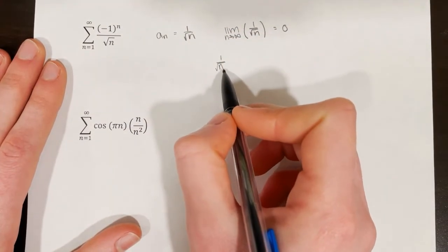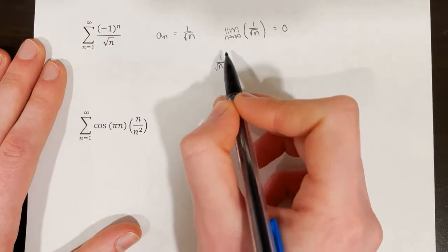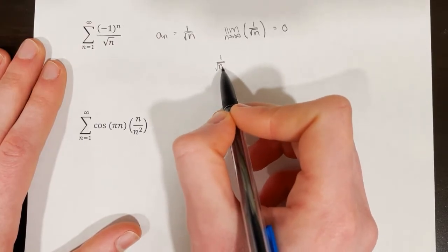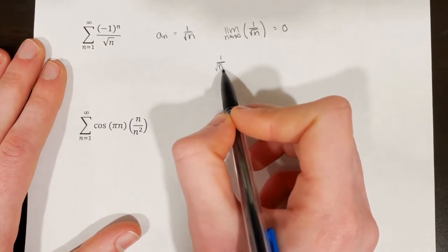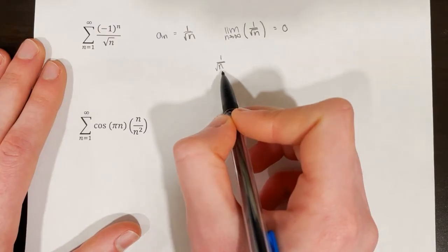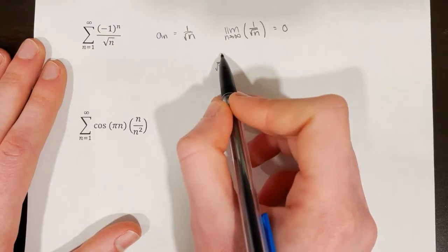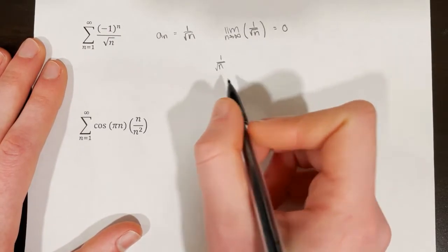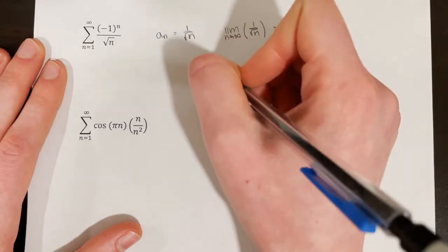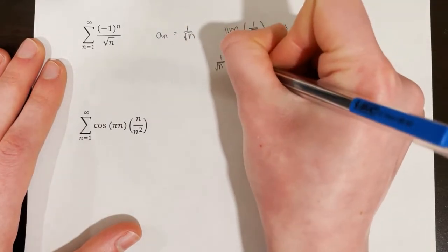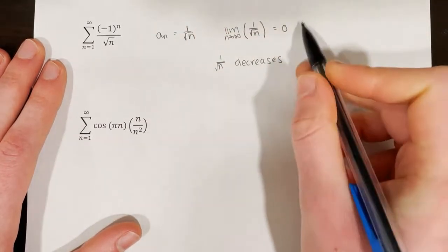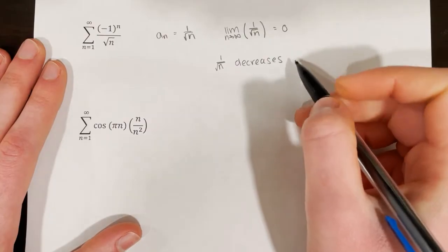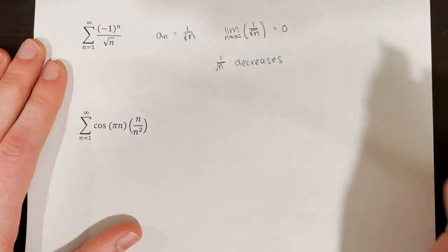Plugging in n equals 1 gives 1 over 1, which is 1. Plugging in n equals 2 gives 1 over rad 2, a smaller fraction. Then 1 over rad 3 is even smaller. So the function is decreasing. Since both conditions are met, the series converges by the alternating series test.